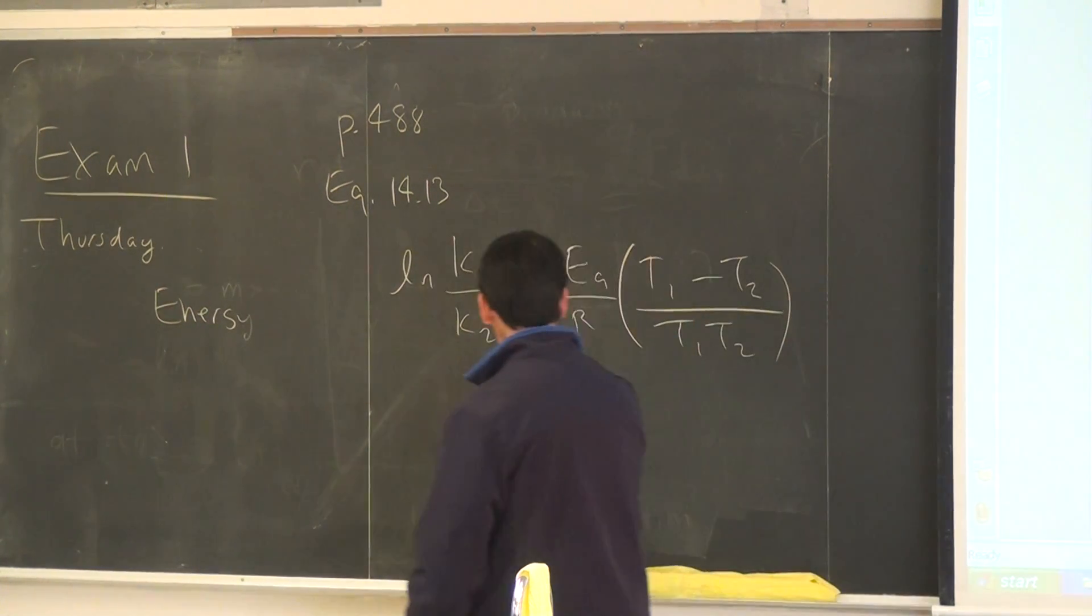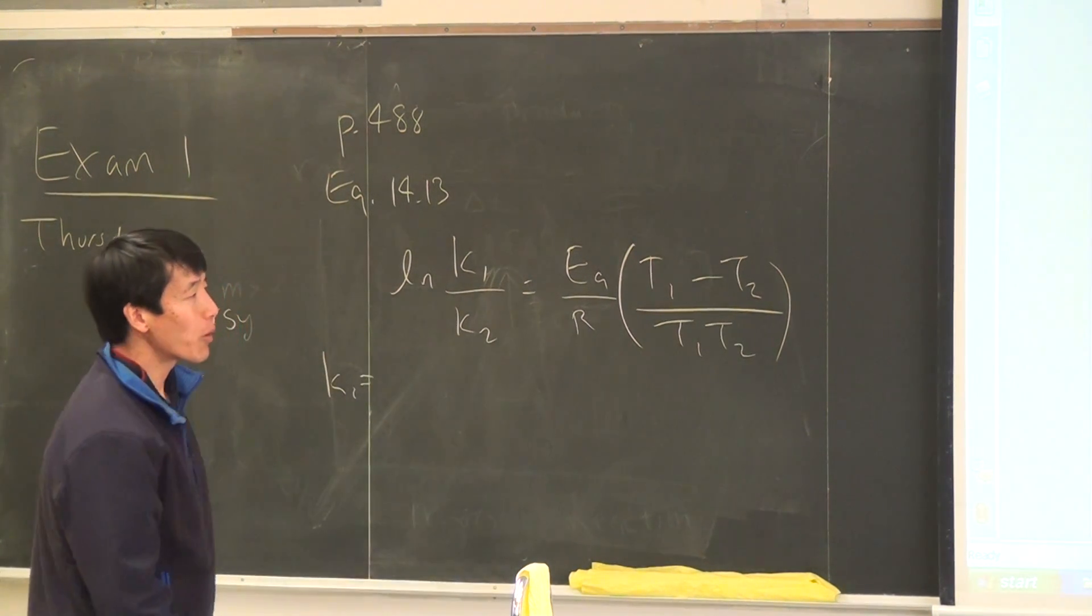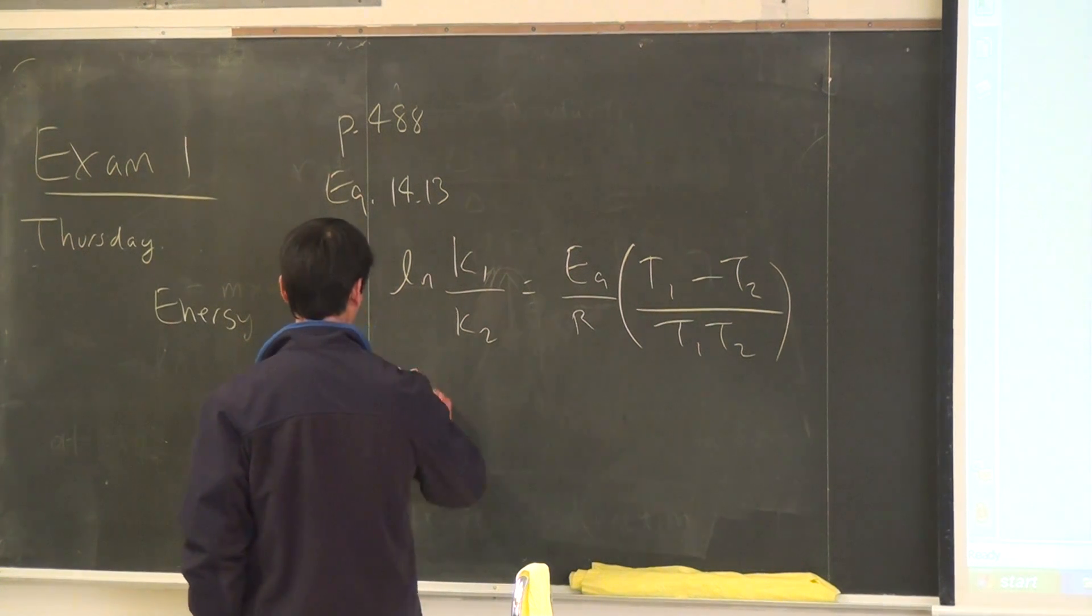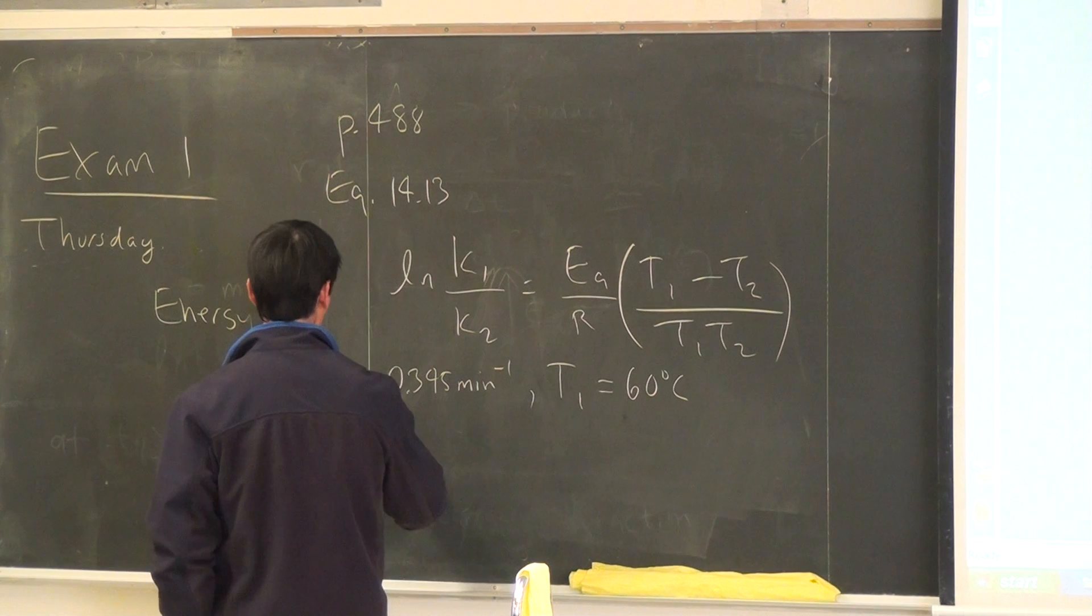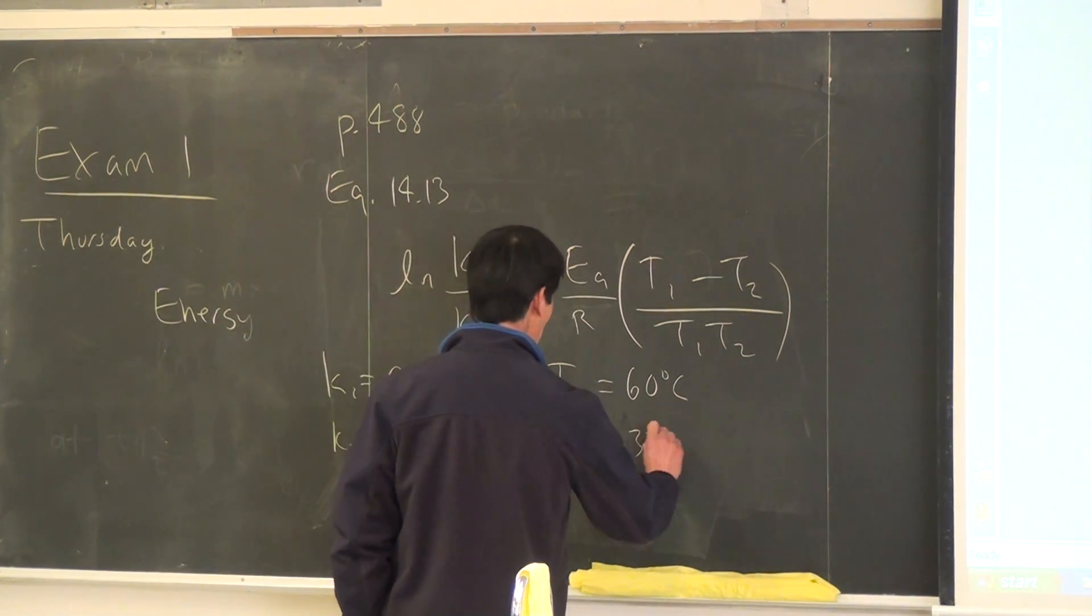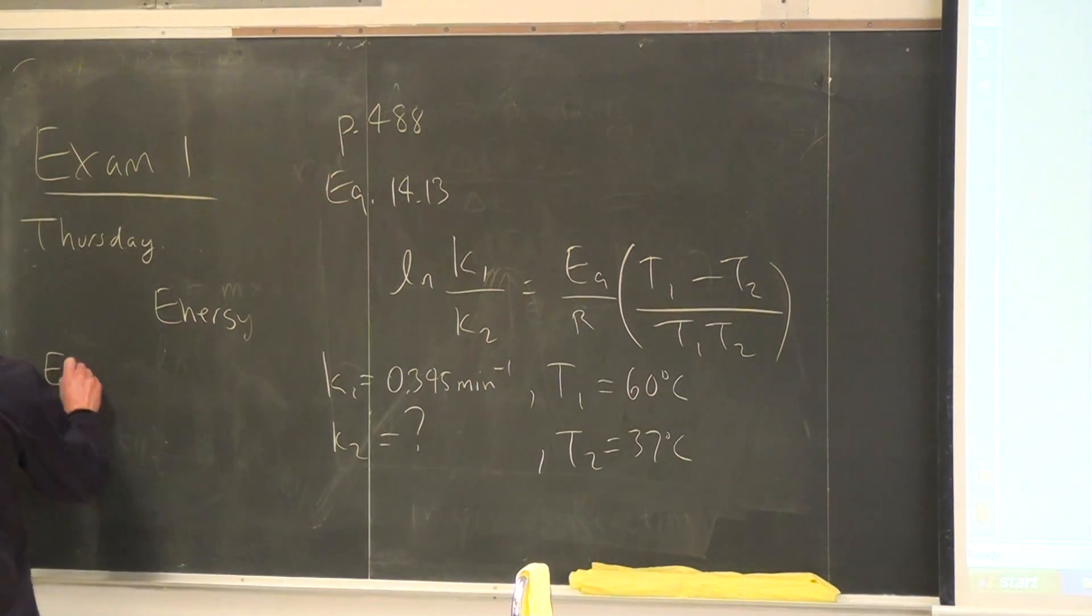So, in our equation, if K1 is 0.345, and this is at T1 of 60 degrees. And for K2, we don't know what that is. And T2 is at 37 degrees.